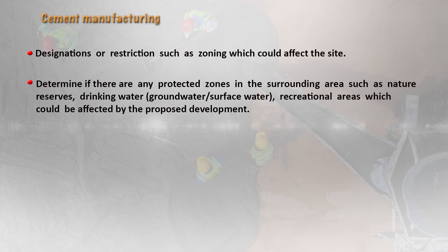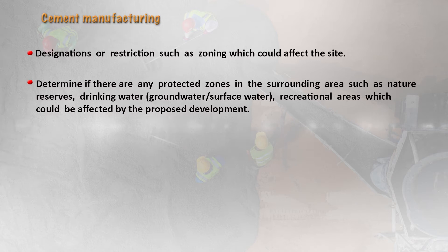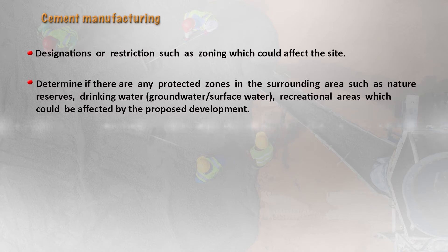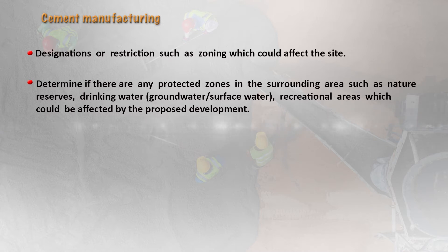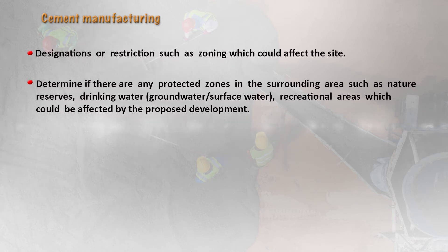For example, if there are important nature reserves, any drinking water the local people are using, groundwater reserves, surface water reserves, or recreational areas such as parks where children or the elderly use for yoga or other activities — all this can be affected by the proposed development and needs to be written down. Baseline studies have to be carried out to determine whether these reserves and areas exist before the proposed development.